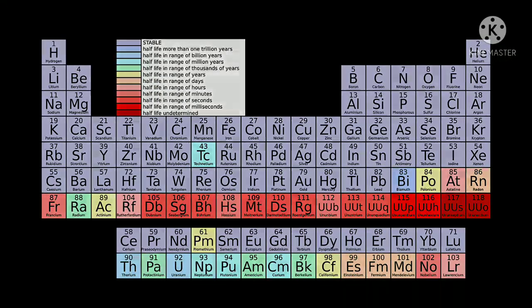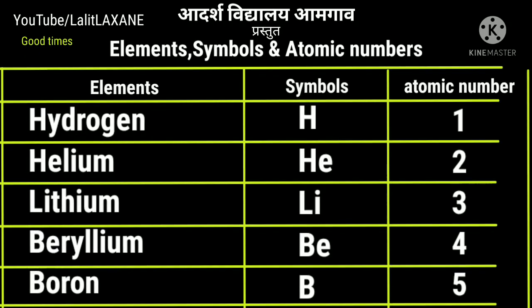Here is the periodic table. Let's begin the elements with their atomic numbers in order. Hydrogen H, Helium He, Lithium Li, Beryllium Be, Boron B with atomic number 5.